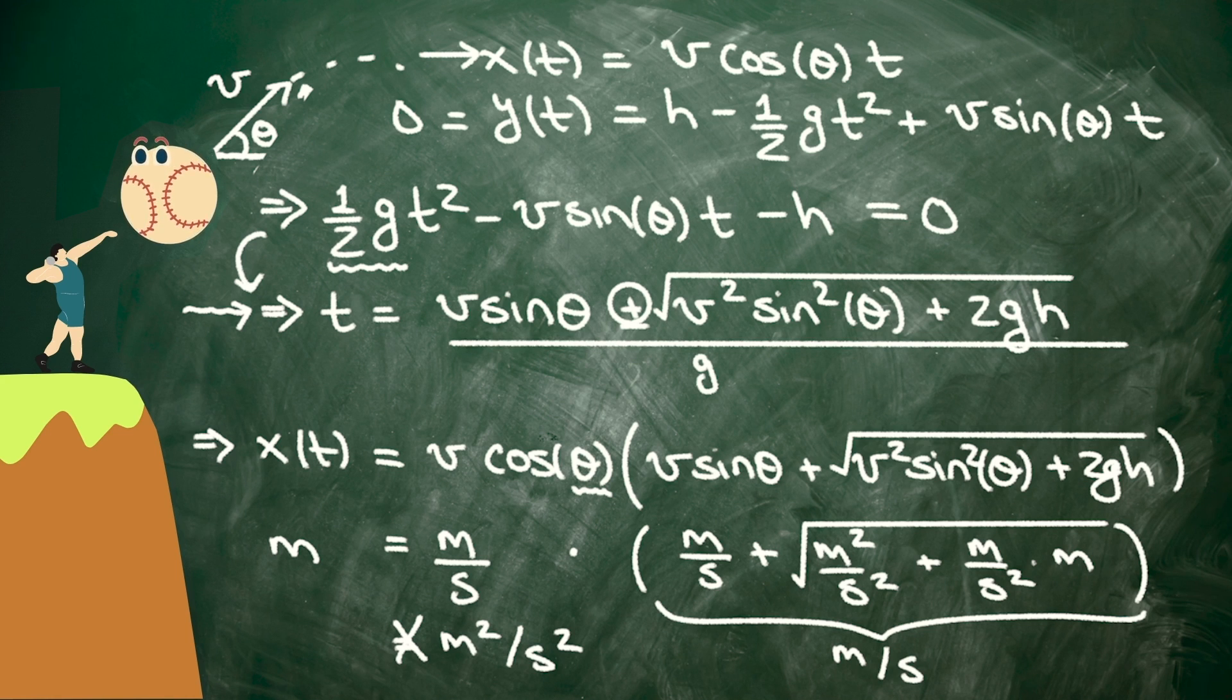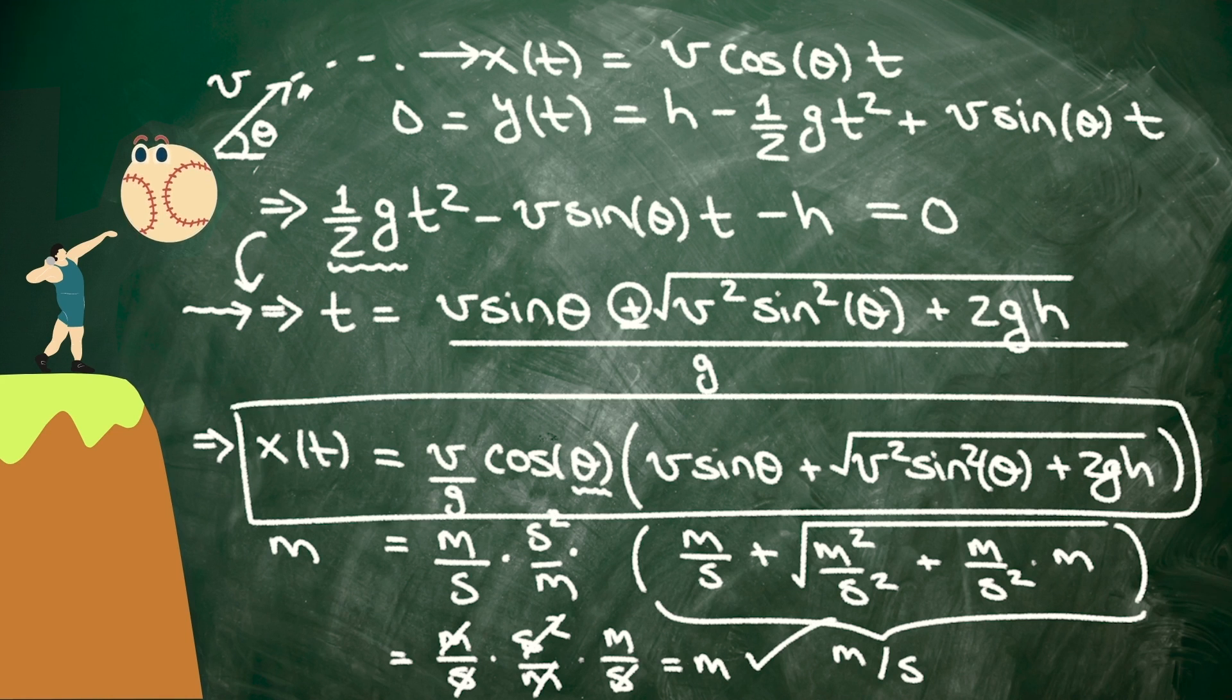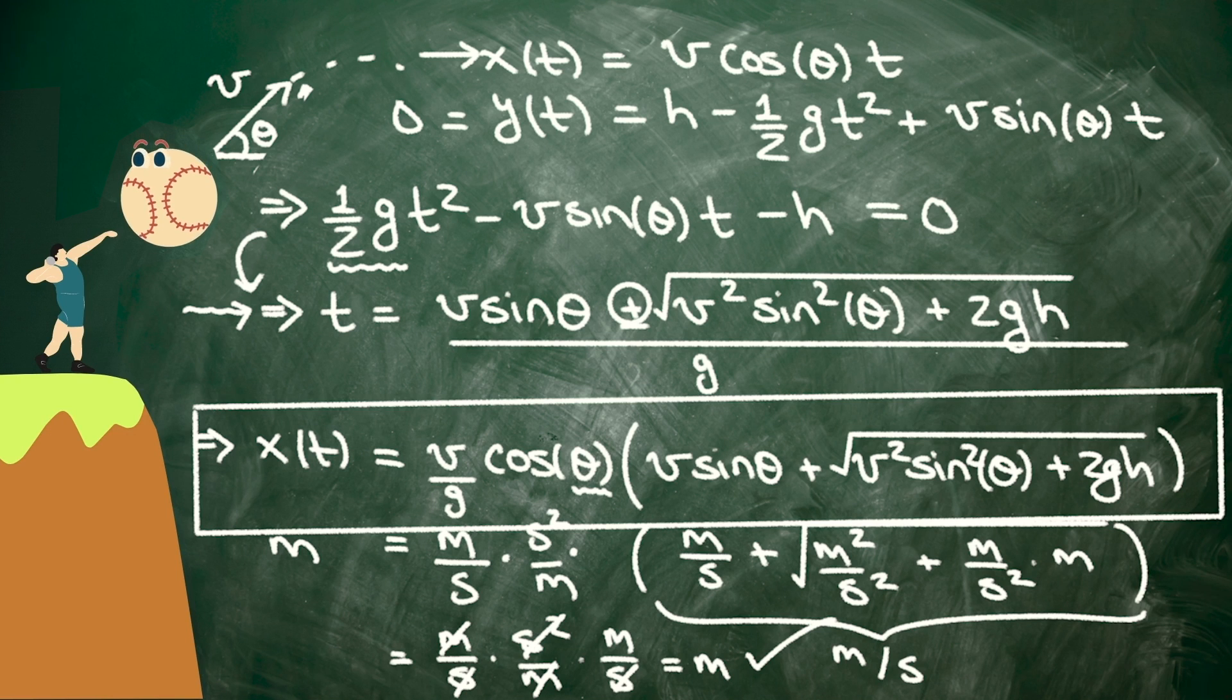So that 1 over g changes the formula for the time to hit the ground, and therefore, it changes the horizontal distance covered. g, remember, has units of meters per second squared. So when I take 1 over that, it flips it over, and I get seconds squared per meter. So altogether, we've got meters per second times seconds squared per meter times meters per second. The meters cancel, the seconds squared cancel, and lo and behold, we're left with meters, which is what we wanted. We were able to catch our algebra mistake by checking the units of our final answer.